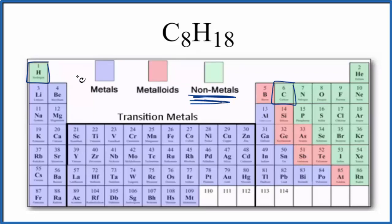So we have these two nonmetals, the carbon and the hydrogen. Two nonmetals means we have a covalent compound, also called a molecular compound. So C8H18 is covalent.